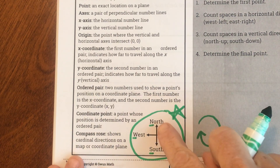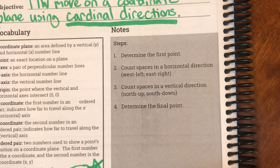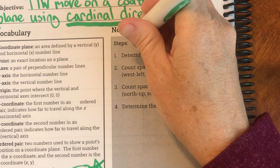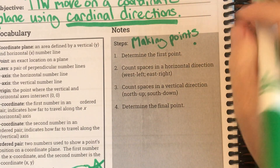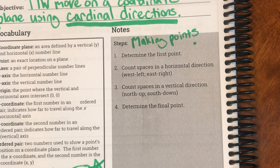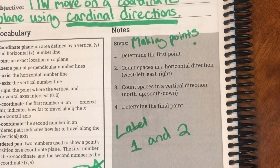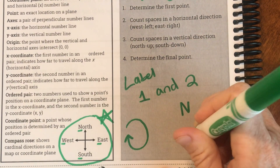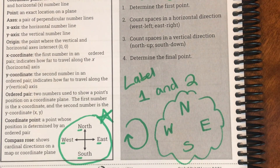It doesn't matter how you remember it, but you do need to know the order. Our steps today are going to be very similar to what we've been doing — determine the first point, make the point, and label one and two. Something else that will help is writing 'never eat sour watermelon' on your graph so you can refer to it and make fewer mistakes.